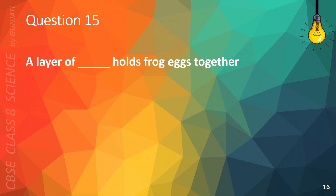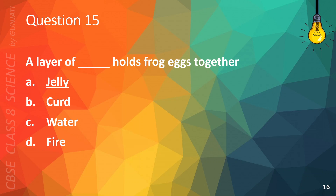Question 15. A layer of blank holds frog eggs together: A. Jelly, B. Curd, C. Water, or D. Fire. The correct answer is A. Jelly.